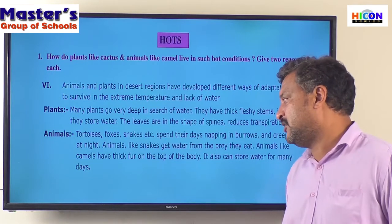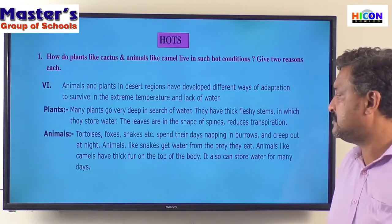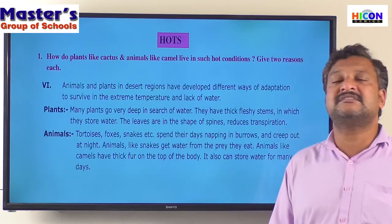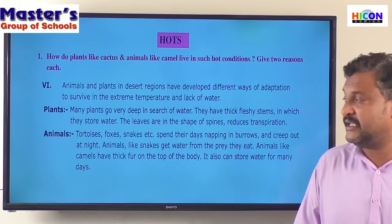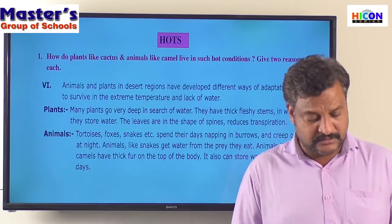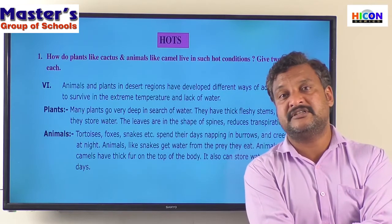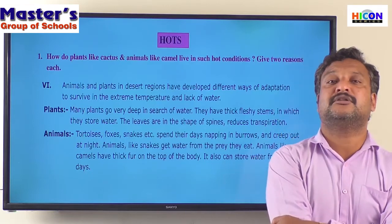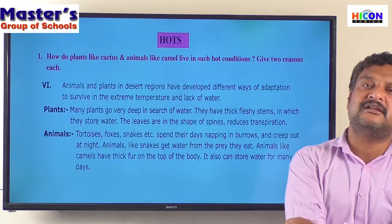Animals like camels have a thick fur on the top of the body which prevents evaporation. They can also store water for many days. Some animals like camels have their own adjustments on the body — like fur which protects them from the heat of the sun, or a specific hump in which they can store food and water in the form of fat. These are features that we cannot see in animals living in usual regions.